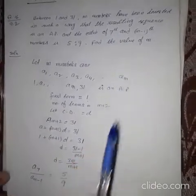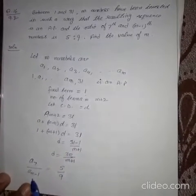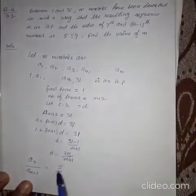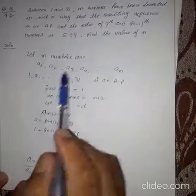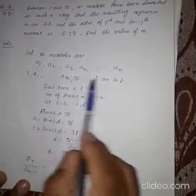Now we are given in the question that 7th number upon M minus 1th number, that is equal to 5 upon 9. So 7th number, that will be 8th term in this sequence.